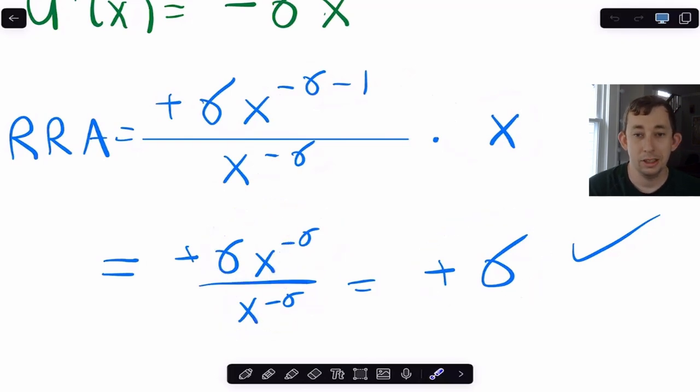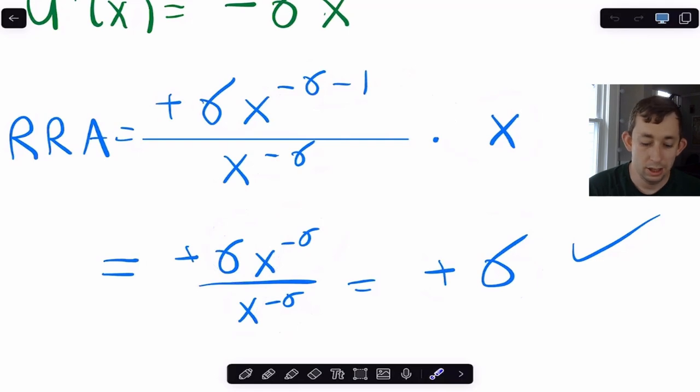And remember that sigma is just a constant, it's just a parameter of the problem, a value that we're given. And so because this is the only thing that we're left with, we now know for sure that this utility function exhibits constant relative risk aversion.